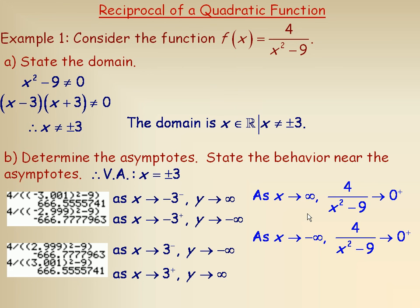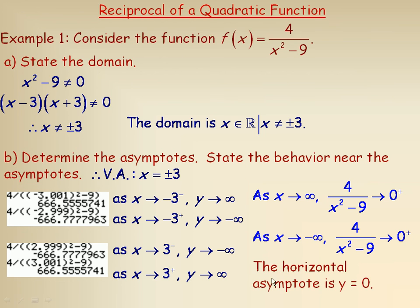Putting it all together on the graph: the x equals negative 3 asymptote goes way up as you approach from the left, and way down from the right. The x equals 3 asymptote goes down as you approach from the left, and up from the right. Both ends of the graph — far right and far left — approach 0 from above. Since both sides approach 0, the horizontal asymptote is y equals 0. That's the end behavior for our function: as x becomes a very large value, the function value gets really, really close to 0.